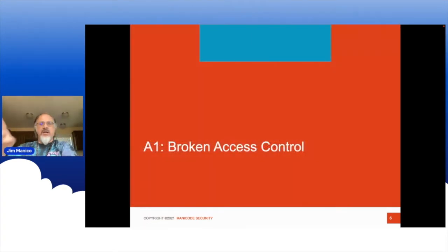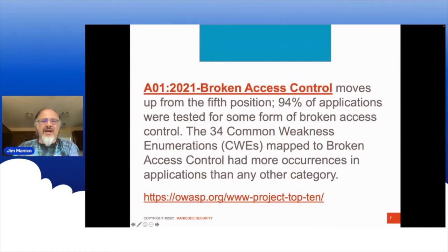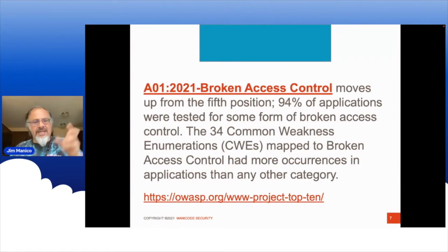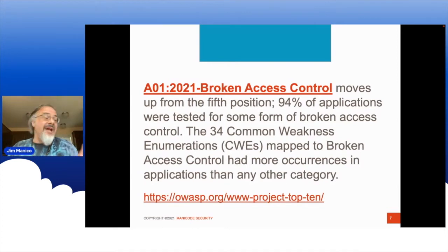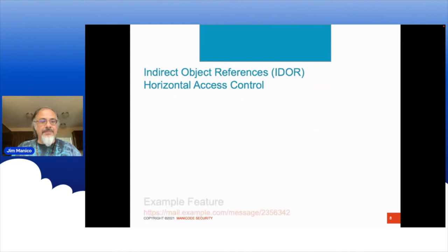A1 — top 10 number one is about access control. The reason is that 94% of tested apps have some kind of broken access control problem. This is because access control is not something you can turnkey-deploy in an app. If you want access control that handles enterprise features, you're going to have to build something custom. Turnkey access control products don't handle hard problems like indirect object reference.